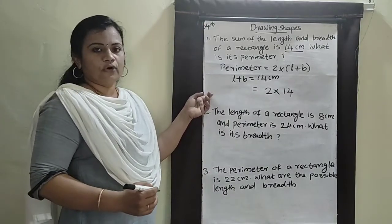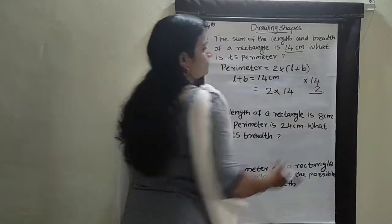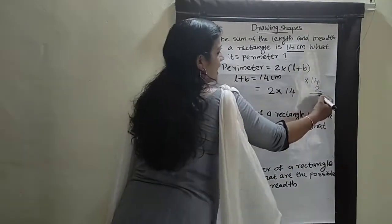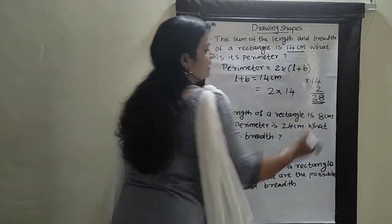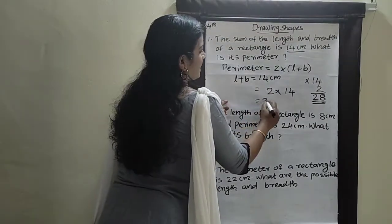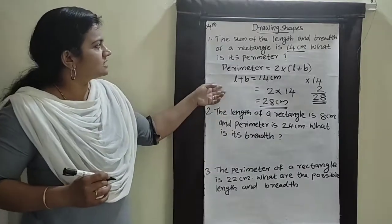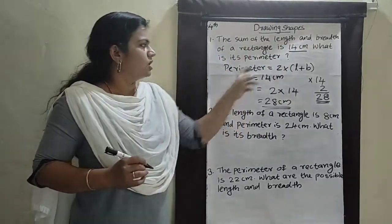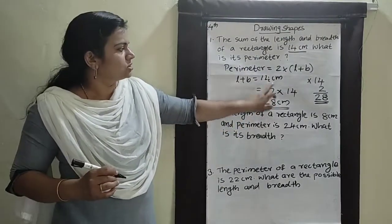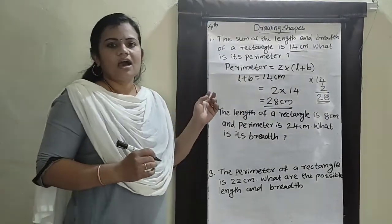So 2 into 14. Using the 2 times table: 2 sevens are... 14 into 2 is 28. So we can write 28 centimeters. In this question, the sum of the length and breadth is given, so L plus B is equal to 14 centimeters. Therefore 2 into 14 is equal to 28 centimeters. Understood.